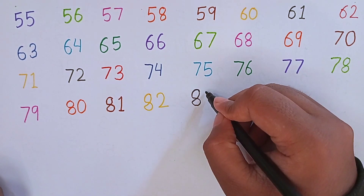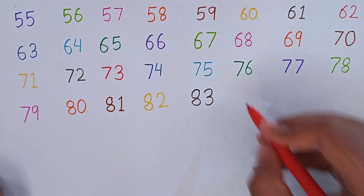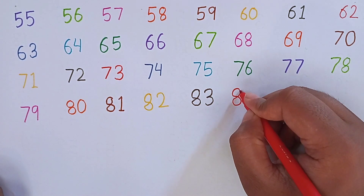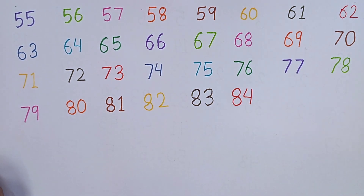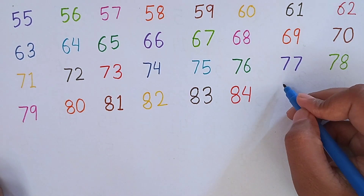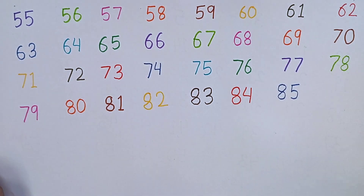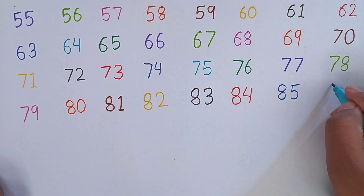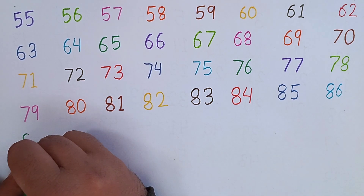Now I will write 83. 8, 3 — 83. After 83, the next number will be 84. 8, 4 — 84. After 84, the next number will be 85. 8, 5 — 85. Remember: 8, 5 — 85. After 85, the next number will be 86. Again, repeat with me: 79, 80, 81, 82, 83, 84, 85, 86.